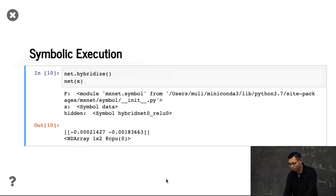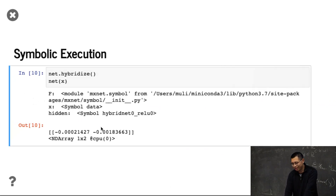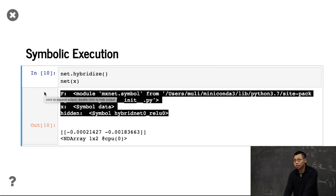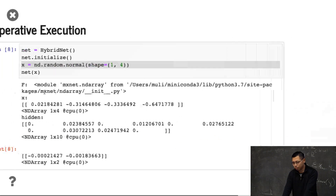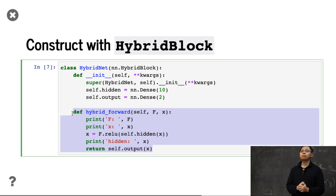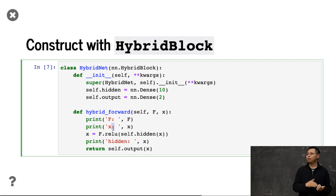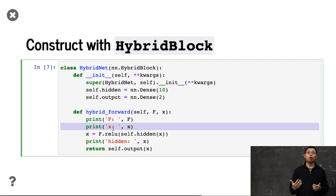So what happens if you run it again after hybridize? You only get the results — you will not see the intermediate print outputs. That's because we only construct the graph once. The first time you run, we construct the graph, compile it, and cache it in the backend. The next time, we skip all the Python code to reduce overhead. No matter how long the program, we don't need to execute it line by line. Print doesn't work anymore after the first run because you don't have the data at construction time, and it only runs once. Only the first time will you see printed results.